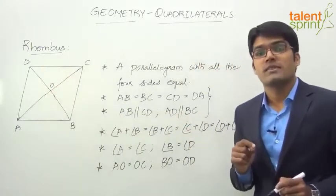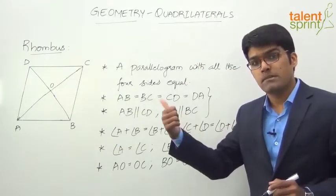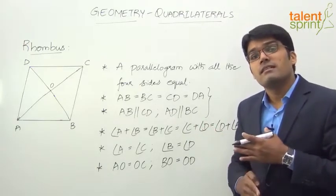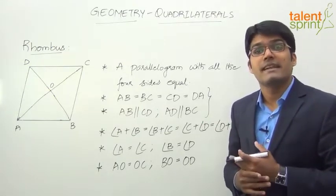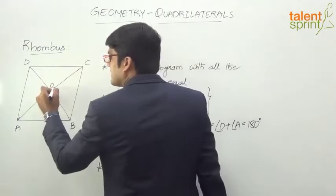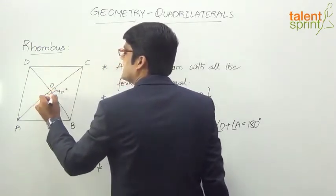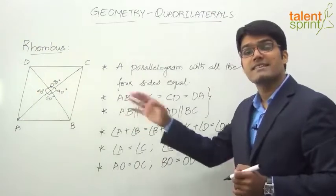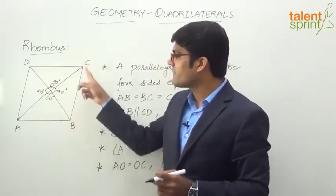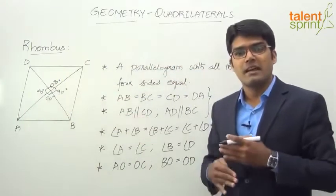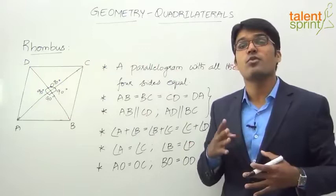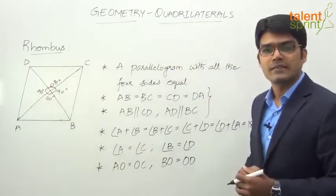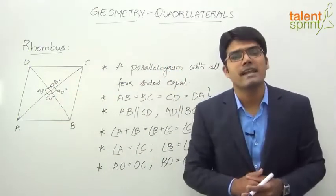Point O divides the diagonals into two equal halves. Another important property is that the diagonals bisect each other at right angles — they intersect at point O forming right angles. All four angles at O are 90 degrees. This means the four parts formed are right angle triangles. The diagonals of a rhombus divide it into four right angle triangles, each having three sides and a right angle. So the diagonals bisect each other at right angles in case of a rhombus.